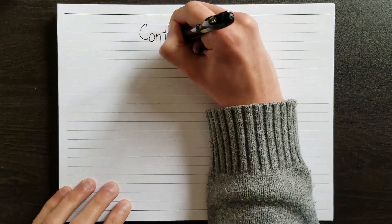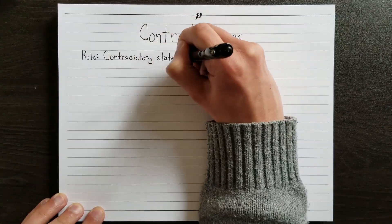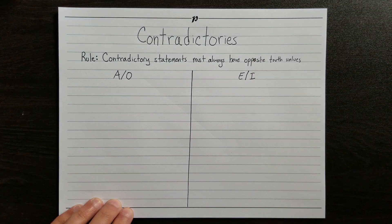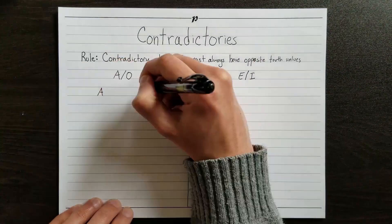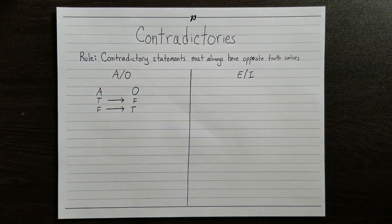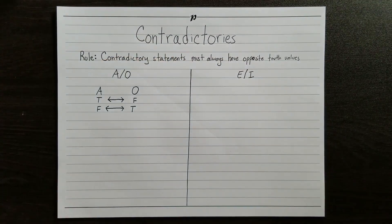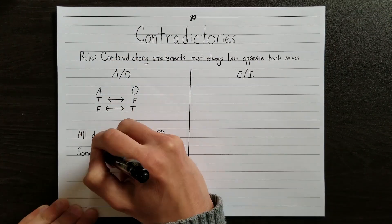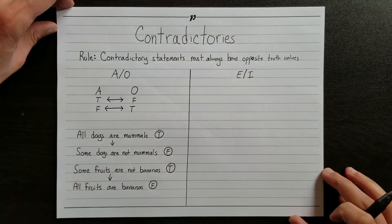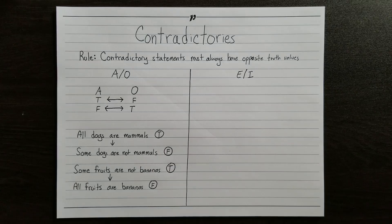So are E-type and I-type statements. When two statements are contradictory, they must always have opposite truth values. This relation holds specifically between A-type and O-type statements, and between E-type and I-type statements. If we know that the A-type statement is true, then we know that the O-type statement must be false. If the A-type statement is false, then the O-type statement is true. The same holds in the other direction — given the truth value of one, we will always know the value of the other. If all dogs are mammals, then it can't be the case that some dogs are not mammals.